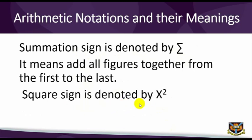Square sign is denoted by x squared. It means multiply the figure by itself twice. E.g. 4 squared is equal to 16.